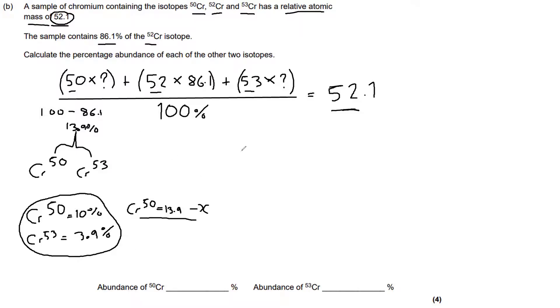So now we're going to assume that chromium-50 is equal to 13.9 minus x. We could have said chromium-53 is 13.9 minus x, but I've gone with chromium-50 as it's at the start of my equation. And let's write that up here.